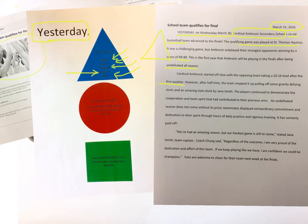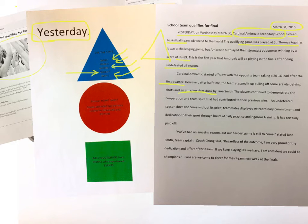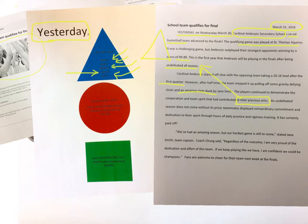However, after halftime, the team stepped it up, pulling off some gravity-defying shots and an amazing slam dunk by Jane Smith. A slam dunk happens in basketball — we're referring to the headline and picture. I've created Jane Smith, but you can use a real name, a friend's name, or a celebrity's name, as long as it makes sense in context. Use what you know — it's probably your greatest tool. The players continued to demonstrate the cooperation and team spirit that had contributed to their previous wins. We know they won because they were undefeated, so something had to contribute to those wins and we've made mention of it here.